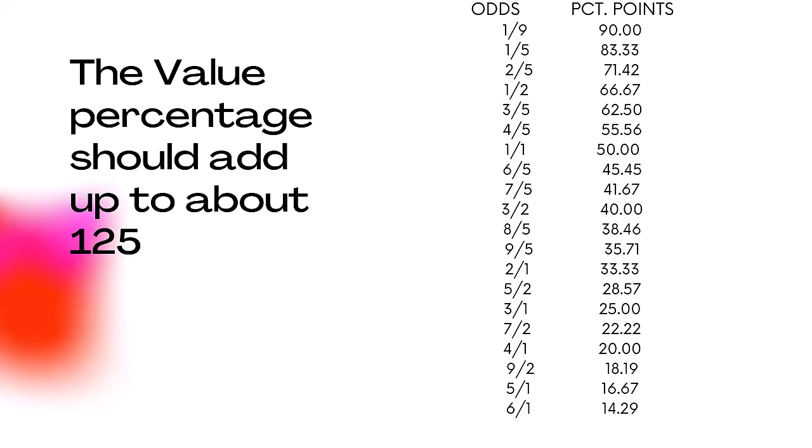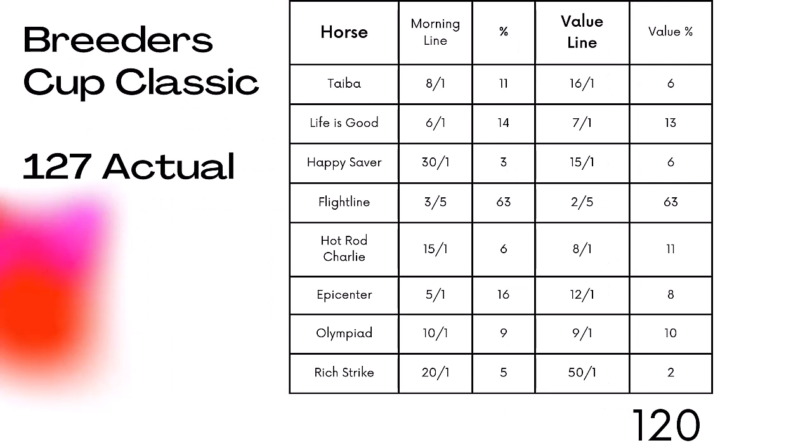In the Breeders' Cup Classic, here is how I calculated my value line. For example, Taba was 8 to 1 on the morning line, but I placed him at 16 to 1 — I didn't think he had as much chance to win. Life is Good I thought was kind of all or nothing — he could win or burn out — so on a win line I had him at 7 to 1, but as an exacta or trifecta horse, more like 10 or 15 to 1.